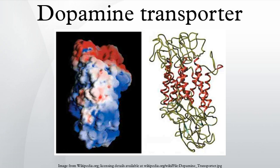DAT is an integral membrane protein that removes dopamine from the synaptic cleft and deposits it into surrounding cells, thus terminating the signal of the neurotransmitter. Dopamine underlies several aspects of cognition, including reward, and DAT facilitates regulation of that signal mechanism. DAT is a symporter that moves dopamine across the cell membrane by coupling the movement to the energetically favorable movement of sodium ions moving from high to low concentration into the cell.